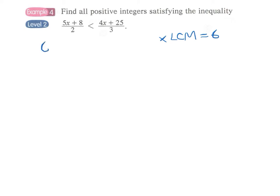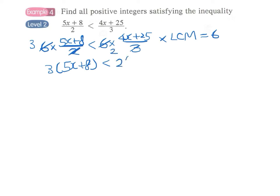Therefore, we have six times this one on the left-hand side less than six times this fraction on the right-hand side. So this will be 3 times 5x plus 8 less than 2 times 4x plus 25.